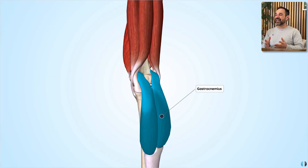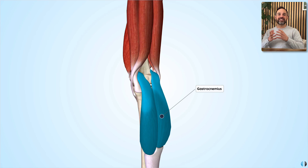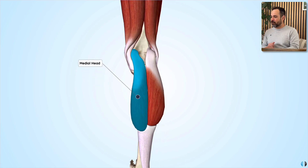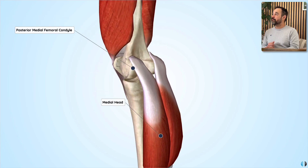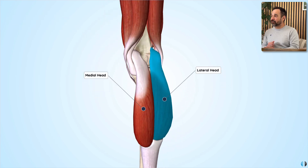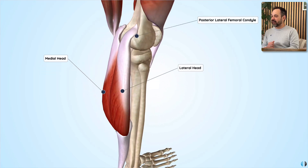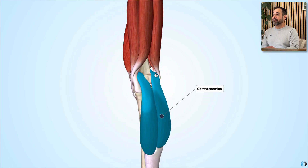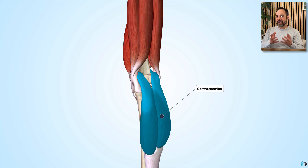The next muscle to highlight is the gastrocnemius muscle. Of course, this muscle is a chief plantar flexor at the ankle with its insertion into the Achilles tendon. However, it does have a role at the knee as it also acts as a weak knee flexor. This muscle has two heads: a medial head, which originates from the posterior medial femoral condyle, and a lateral head that originates from the posterior lateral femoral condyle. The fact that it has these two heads originating just superiorly to the knee joint helps us remember that it has a role in knee flexion.